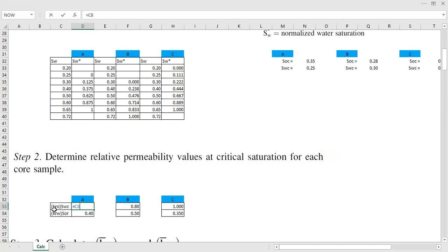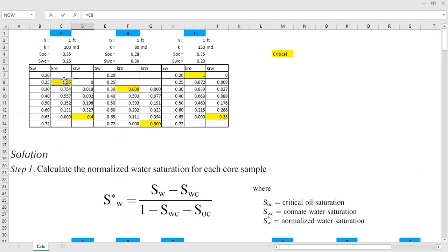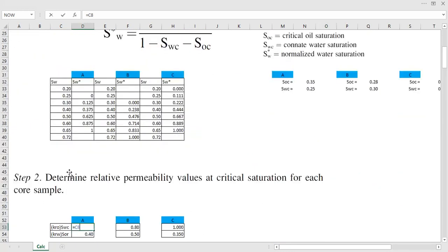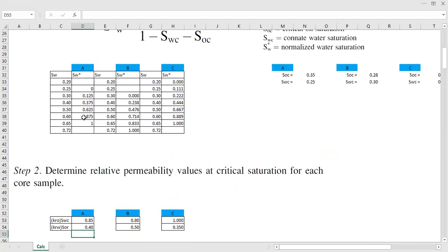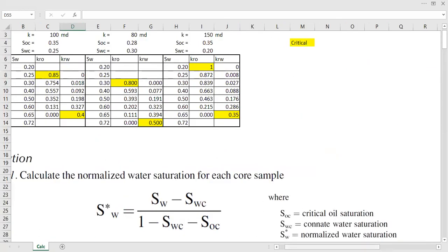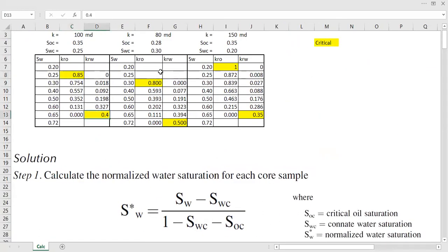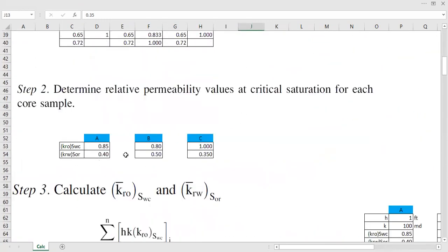So the maximum oil relative permeability will occur at connate water saturation, and that's why the value is 0.85. And on the other hand, the maximum water relative permeability will occur at residual oil saturation, which is 0.4 from the data given. So that's why I use yellow color here to make it easier for me to distinguish the relative permeability at critical saturation.